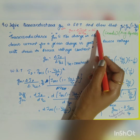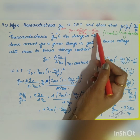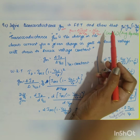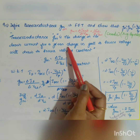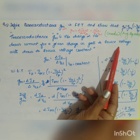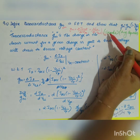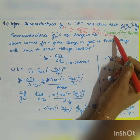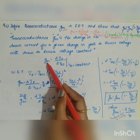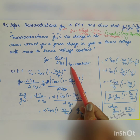In the case of the FET, the output current is the drain current id, and the input voltage is the gate-to-source voltage vgs. So transconductance gm is the change in drain current for a given change in gate-to-source voltage, keeping drain-to-source voltage vds constant. Therefore gm equals del id divided by del vgs, with vds constant.